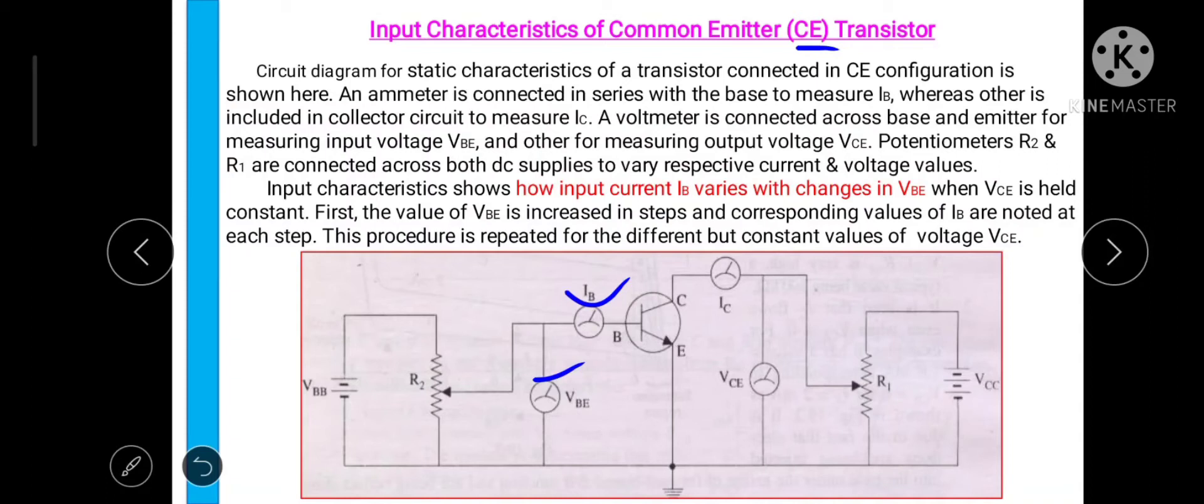In short we can say we have to keep the output voltage VCE constant and just we have to change the input voltage by this potentiometer. We have to record the input current and input voltage by using this current meter and volt meter on input side. Now here you have to concentrate on input side that the base is P type and emitter is N type. So on input side we can say it is just a PN junction which is connected in forward bias mode.